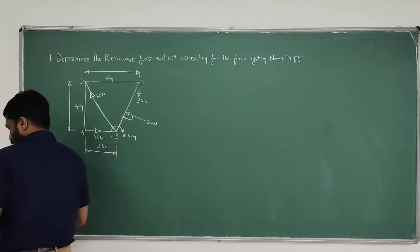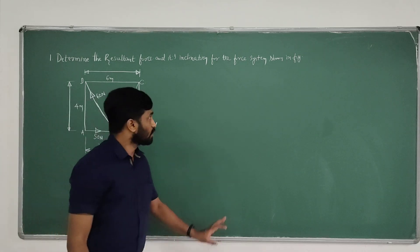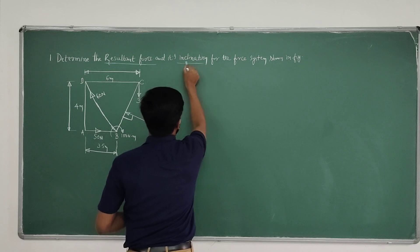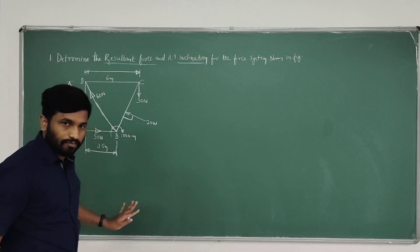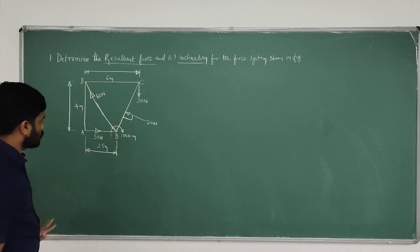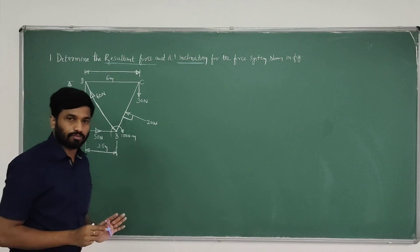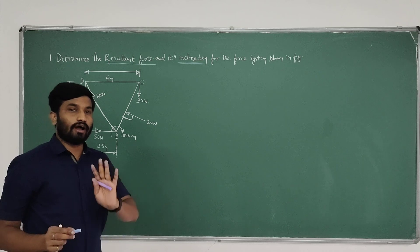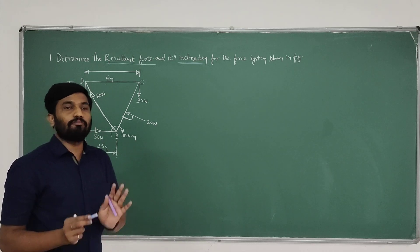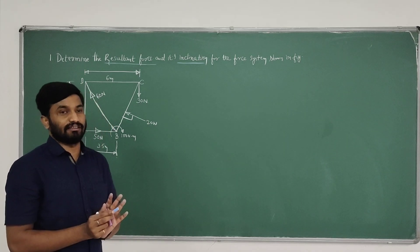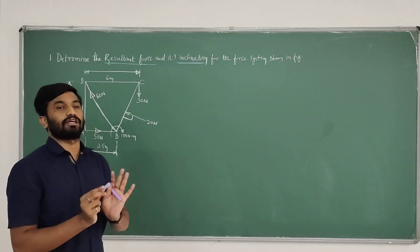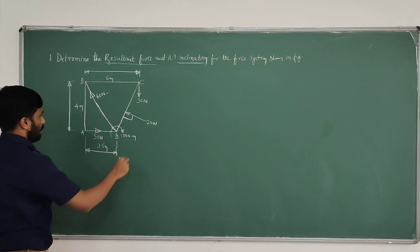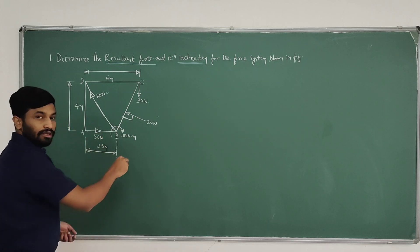This is the given problem. The ultimate aim is to determine the resultant force and its inclination. In the given force system, points A, B, C, D have several forces acting. We have to determine resultant R and theta. Before that, we identify how many forces are present and which are purely vertical or purely horizontal. If any force is inclined, we resolve it into pure horizontal and vertical components. Here 60N is inclined, 200 is also inclined, 50 is purely horizontal, and 30 is purely vertical.